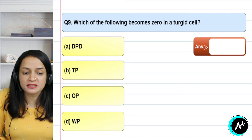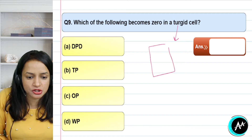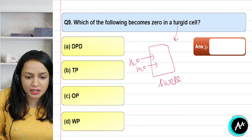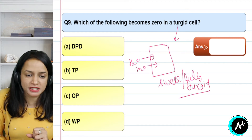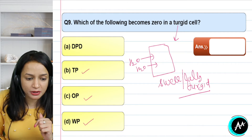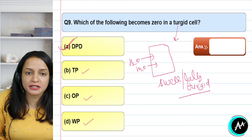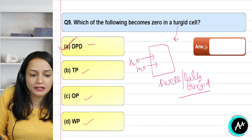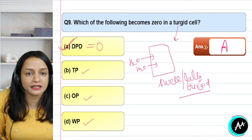Question 9: which of the following becomes zero in a turgid cell? A fully turgid cell is one that has swelled up with maximum water entry and is fully turgid without bursting. In a fully turgid cell, turgor pressure is not zero, osmotic pressure is not zero, and water potential is not zero. What becomes zero is DPD — Diffusion Pressure Deficit. DPD becomes zero when the cell is fully turgid. The correct answer for question 9 is option A.